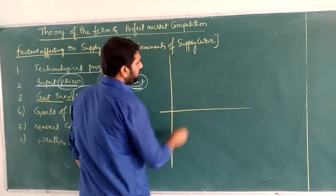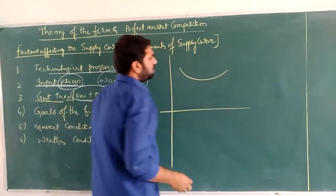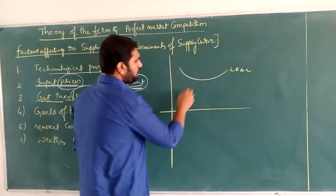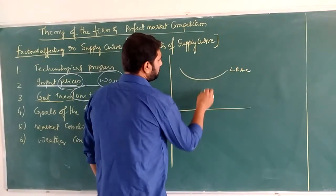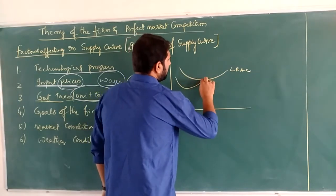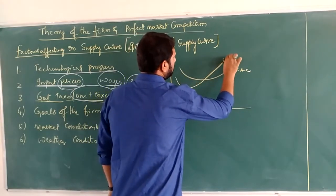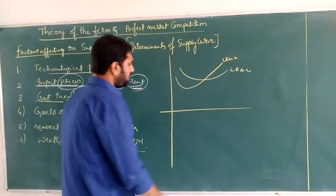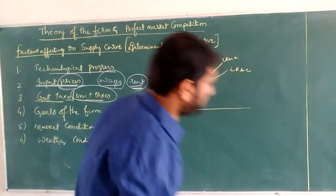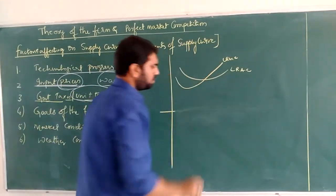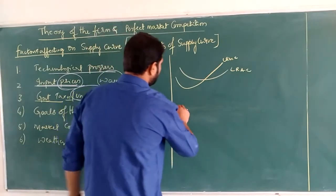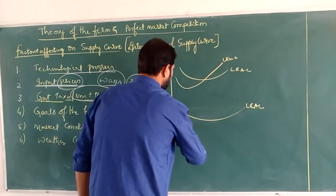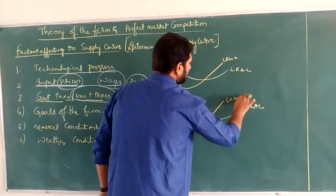Looking at the graph, we have the long-run average cost and the long-run marginal cost, where one cost curve cuts and rises. At the same level, we can observe long-run average cost and long-run marginal cost.